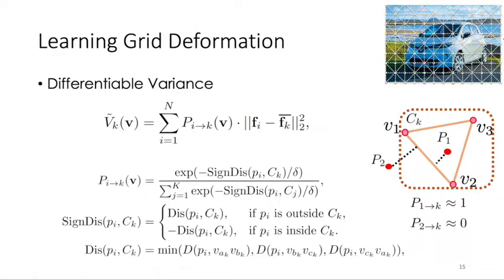And if the pixel is outside of the grid or far away from the grid, the probability will be close to zero, such as p2 to k here. In this way, we can back propagate the gradient into vertex position analytically.